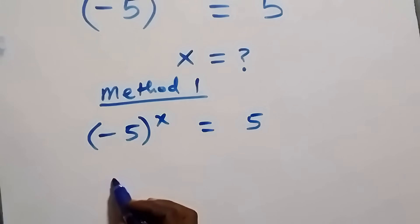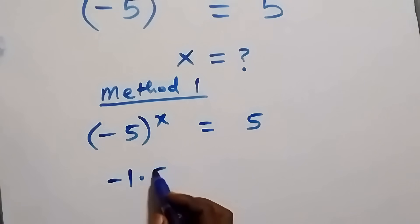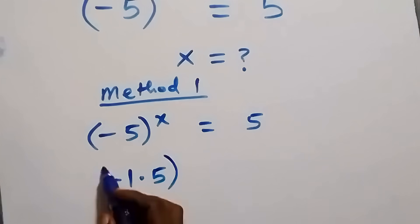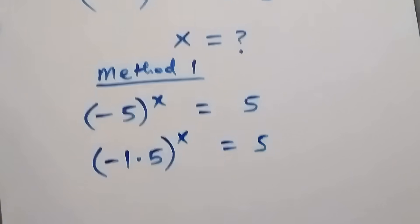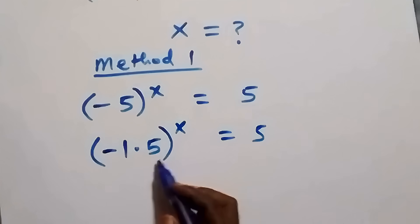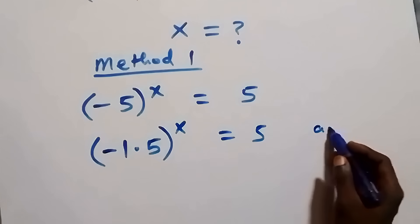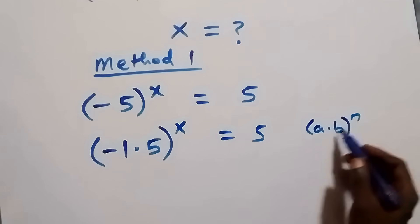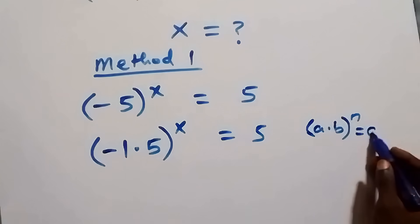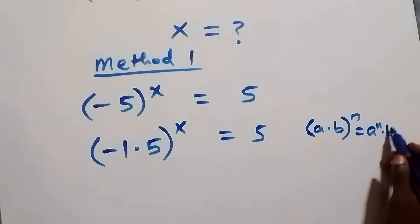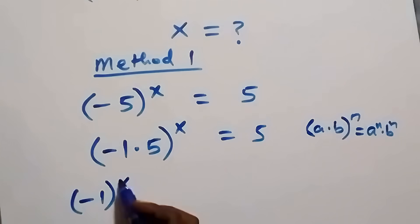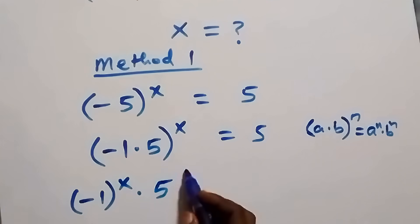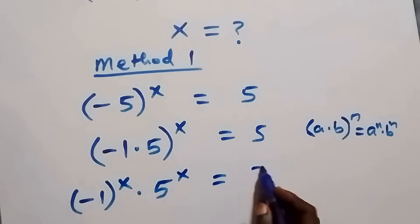We separate this as minus one times five raised to power x equals five. Then applying the rule that (a times b) raised to power n equals a raised to power n times b raised to power n, we get minus one raised to power x times five raised to power x equals five.